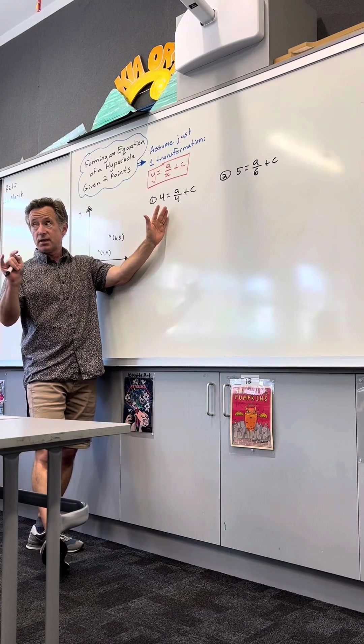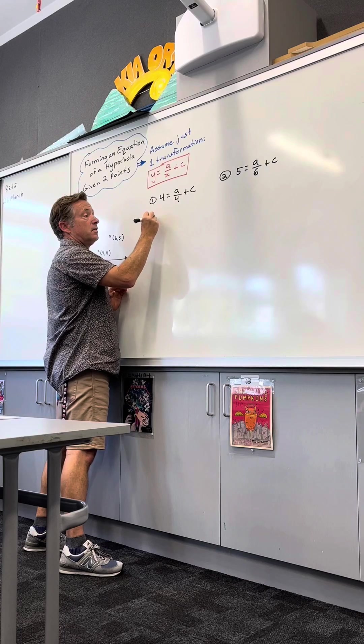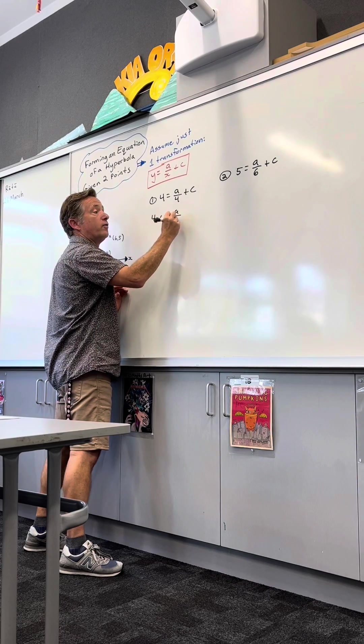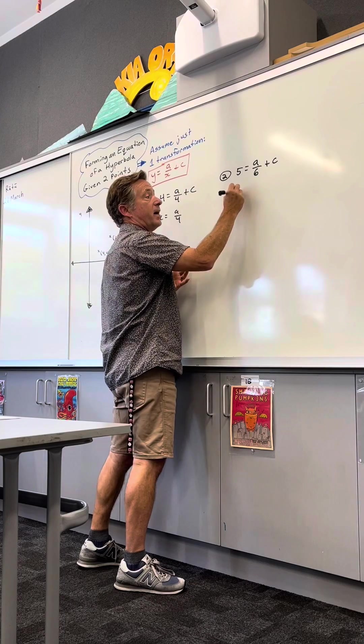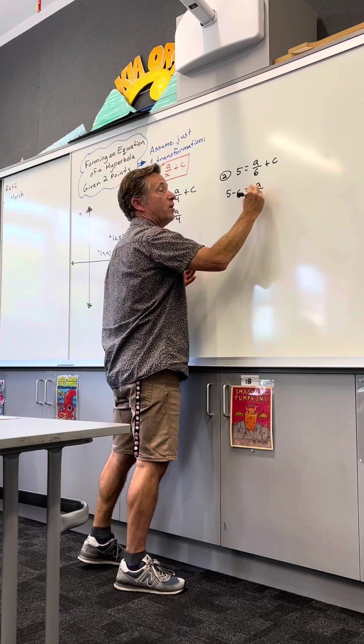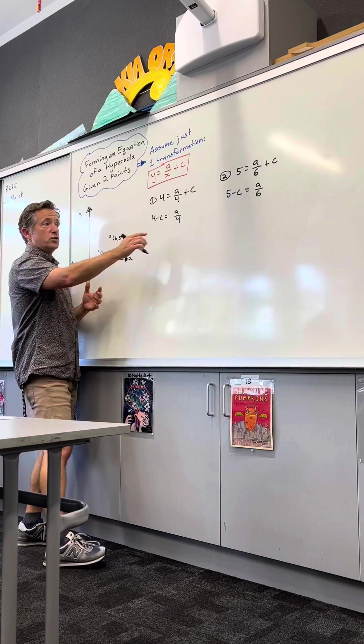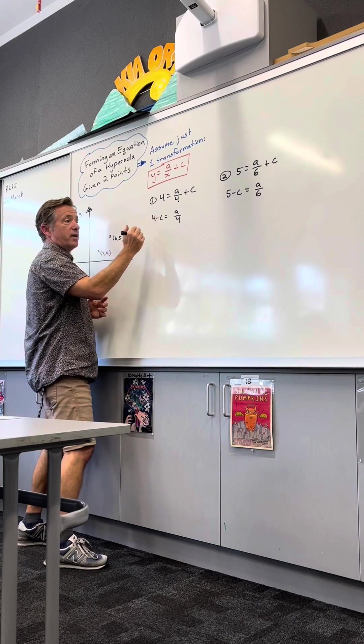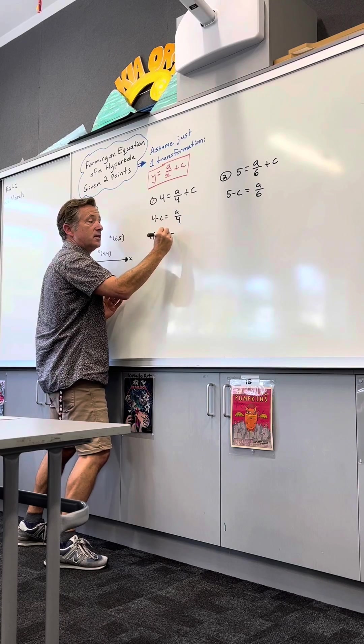So I'm going to get a by itself for both of these. I'm not going to solve for a, I'm just going to get a by itself. So that's 4 minus c equals a over 4. So get a by itself, which means multiply this whole equation by 4, which means 4 brackets, 4 minus c equals a.